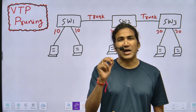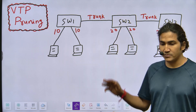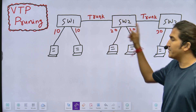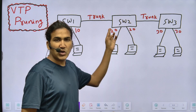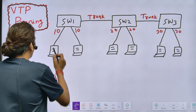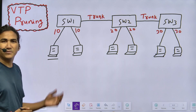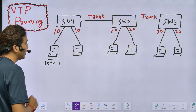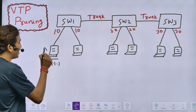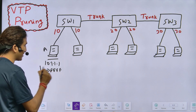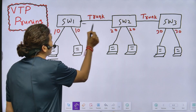VTP pruning only sends broadcast or multicast messages from the trunk link where it is needed. For example, here I have one lab network where three switches are connected with each other, and the links between switches are configured as trunk. By default, all VLANs are allowed on the trunk link - VLAN 1 to 4096. When a VLAN 10 user generates a broadcast message, such as a gratuitous ARP, switch one will forward it to switch number two.